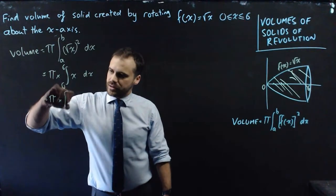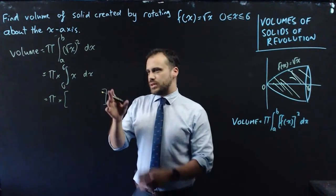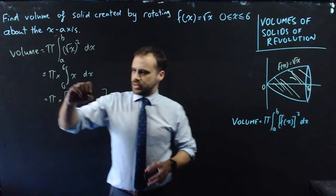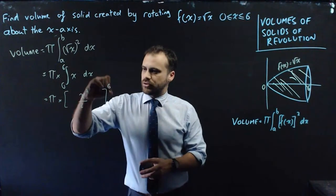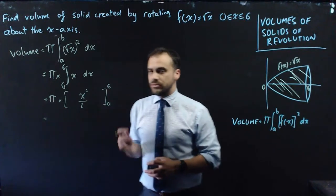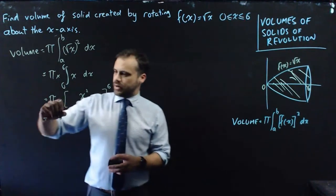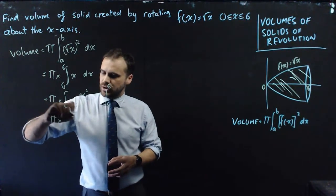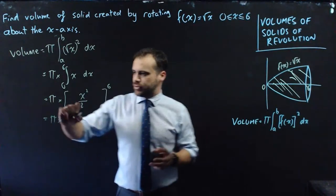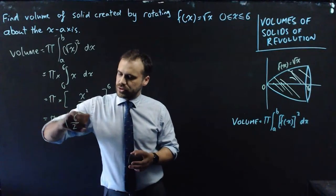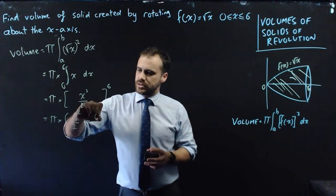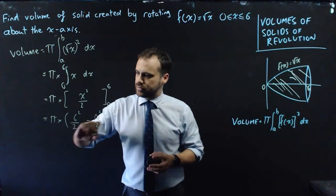Root x squared is x with respect to x. So now we have pi times, now the integral of x is x squared over 2, and we're integrating between 6 and 0. And then we have pi times, and then we do that whole thing there. So we get 6 squared over 2 minus 0 squared over 2.